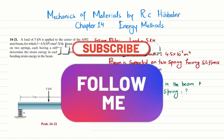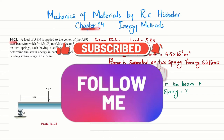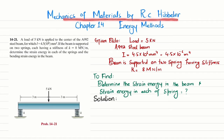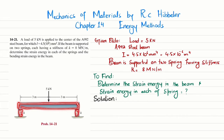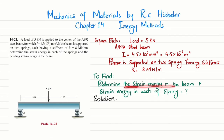Welcome back. In this video we are going to solve problem 14-21 taken from chapter 14, Energy Methods, in Mechanics of Materials by R.C. Hibbeler. The problem states: a load of 5 kilonewtons is applied to the center of an A992 steel beam with moment of inertia 4.5×10⁶ mm⁴. The beam is supported by two springs each with stiffness k = 8 MN/m. Determine the strain energy in each spring and the bending strain energy in the beam.